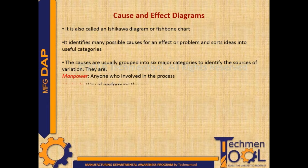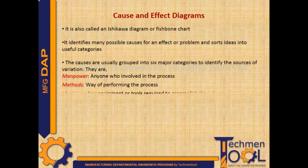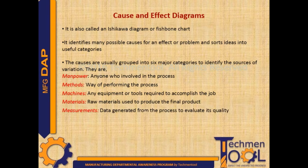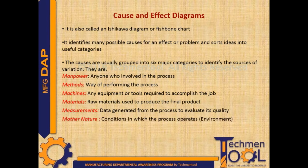The six categories are: Manpower – anyone involved in the process; Methods – the way of performing the process; Machines – any equipment or tools required to accomplish the job; Raw Materials – used to produce the final product; Measurements – data generated from the process to evaluate its quality; and Mother Nature – the conditions in which the process operates.